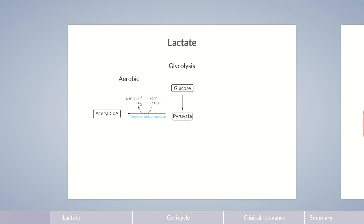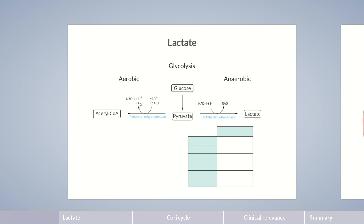However, anaerobic pyruvate conversion isn't. Here, lactate dehydrogenase catalyzes the conversion of pyruvate to lactate. Lactate dehydrogenase exists in five forms in the body. These isoenzymes are abbreviated with LDH and numbered from 1 to 5. Although they all catalyze the same reaction, their occurrence varies depending on the tissue.